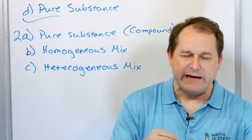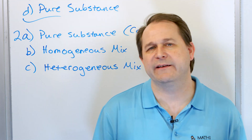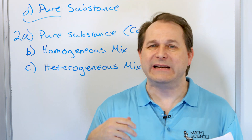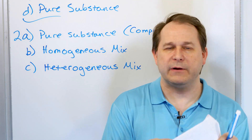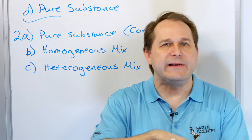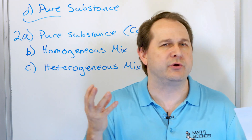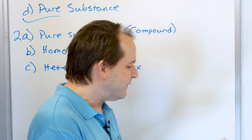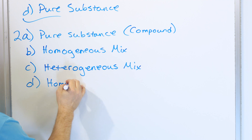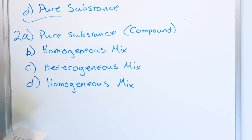Part D: wine. Wine is not a pure substance — it has alcohol and other additives and flavors. It's a solution, and nothing settles out of wine. It's a mixture of lots of different things, and everything is uniformly mixed. If you sample the top or bottom of the bottle, you get the same concentration. So wine is a homogeneous mixture.